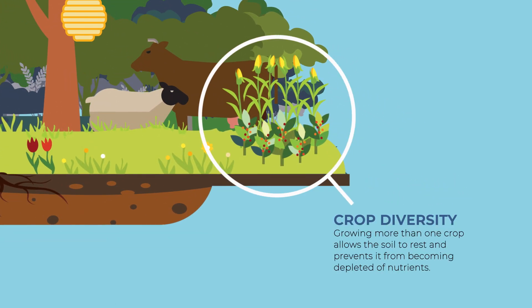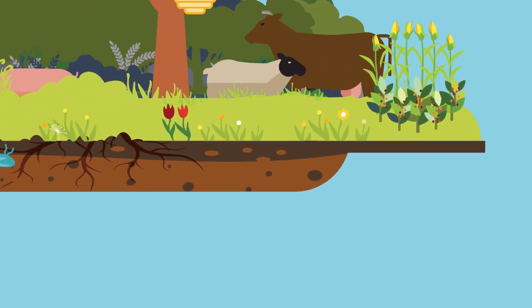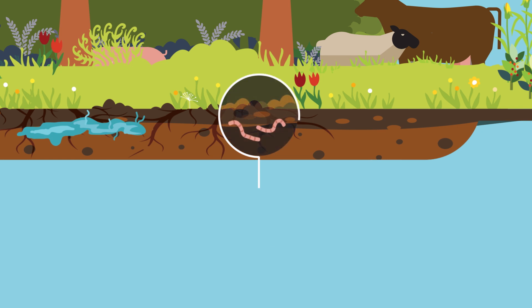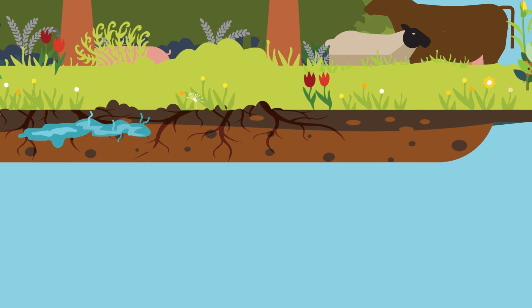By growing more than one crop, we can enrich the soil and prevent the depletion of nutrients. By avoiding chemicals, the earth becomes healthy and full of life.